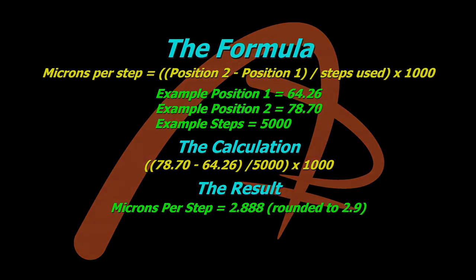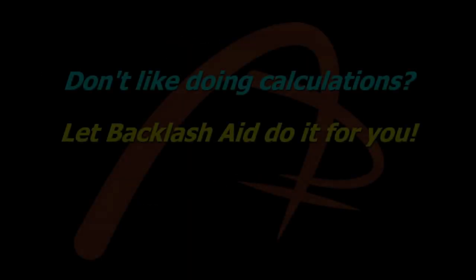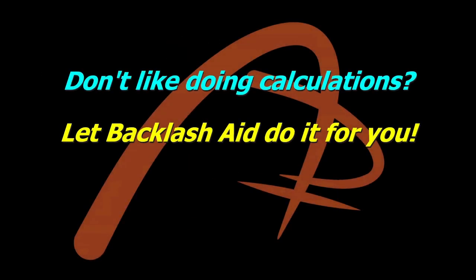But what if you don't like doing the math? So if you don't like doing all the calculations you can let backlash aid do most of it for you. It can't do the final bit, you've got to do the multiplication by a thousand yourself, but backlash aid can be used for this step and this is how you do it.